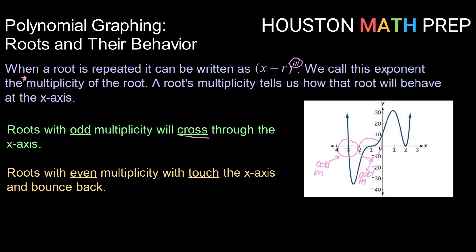If a root has an even multiplicity, then the graph will just touch the x-axis and bounce back. We see an example of that here at x equals 2, where our graph comes down to touch and bounce back. So that touch and bounce back means we must have had an even multiplicity.